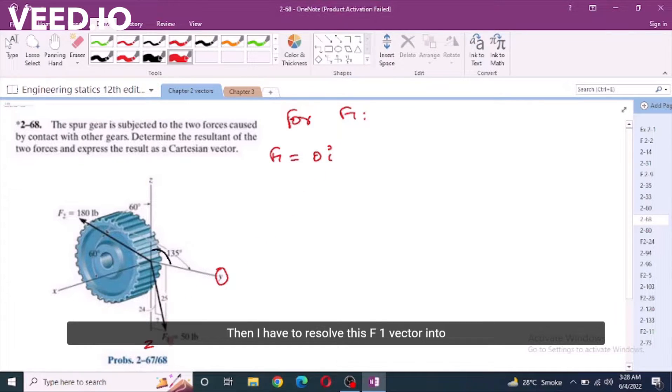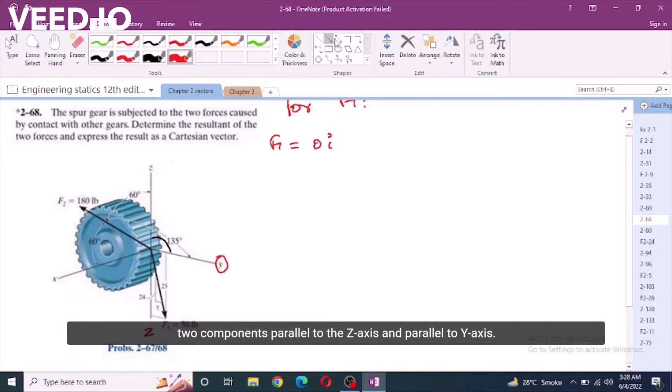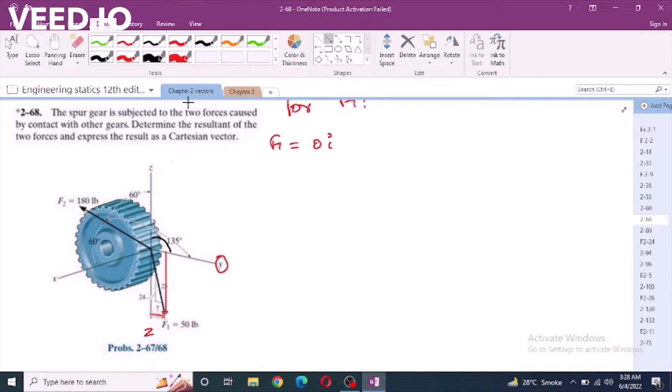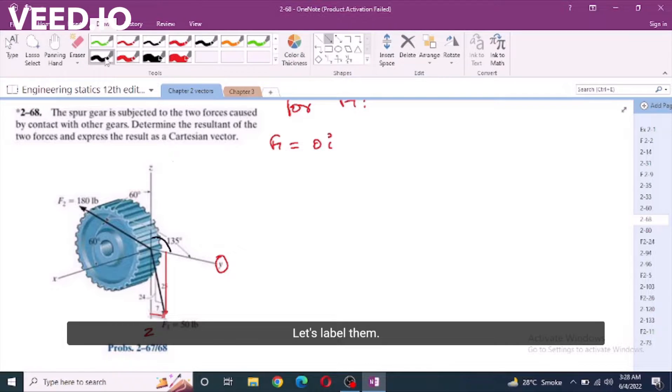Then I have to resolve this f1 vector into two components parallel to z-axis and parallel to y-axis. Let's label them. Now, this one is f1z and this component is f1y.